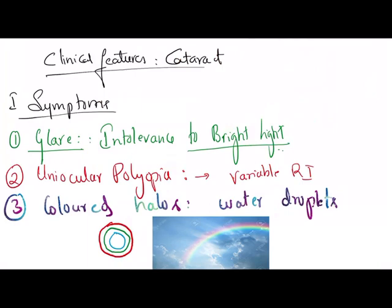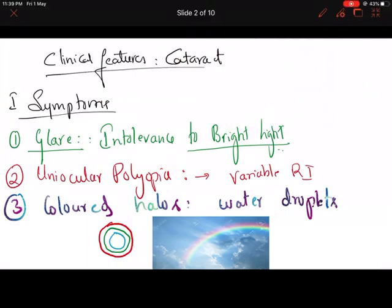Coming to the symptoms — the first symptom is glare, also known as intolerance to bright light. For example, when a person is driving a car, bright light from the headlight of the opposite vehicle, which he used to tolerate earlier, is no longer tolerable. Similarly, if a person was previously able to tolerate bright sunlight but can't now, that also comes under glare.